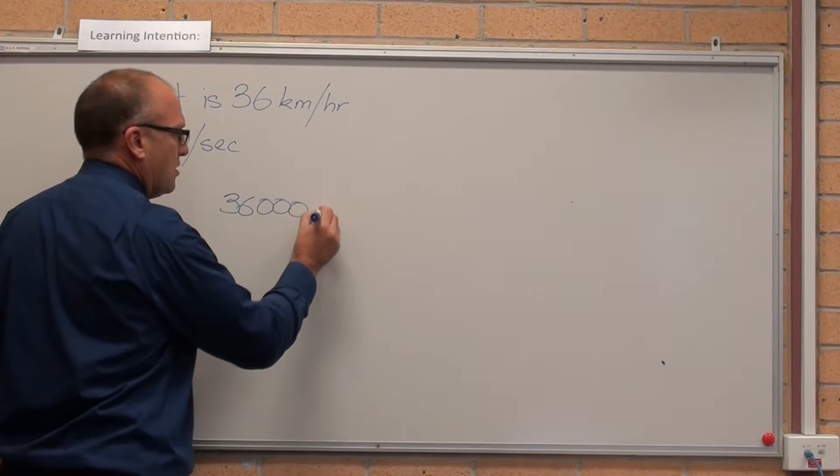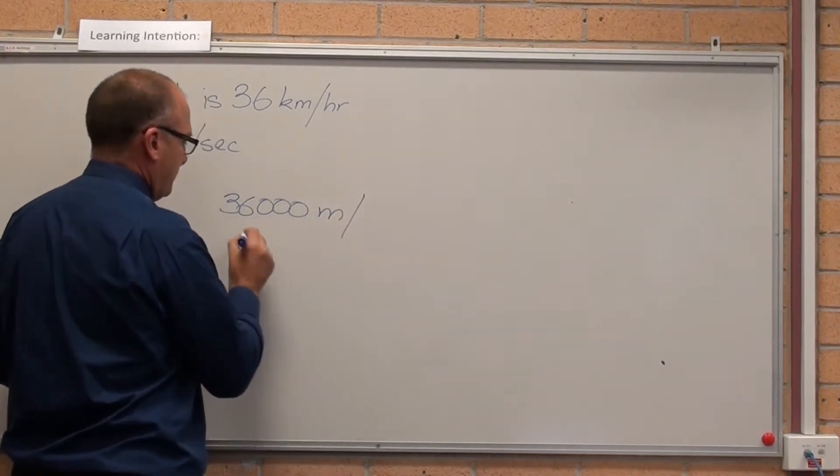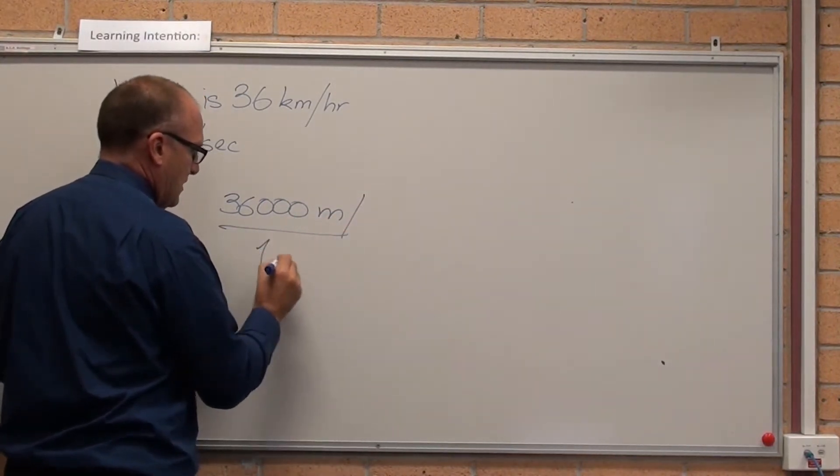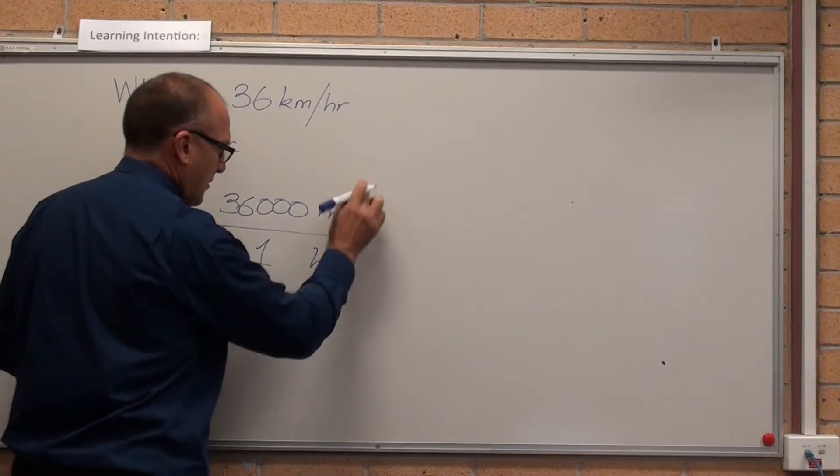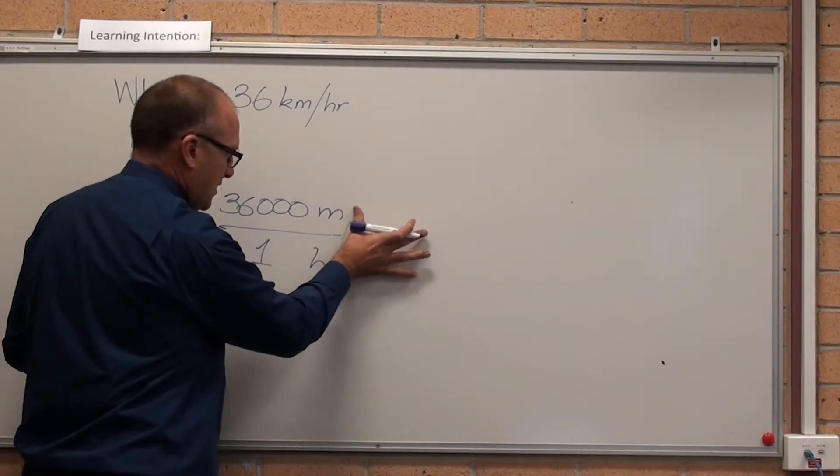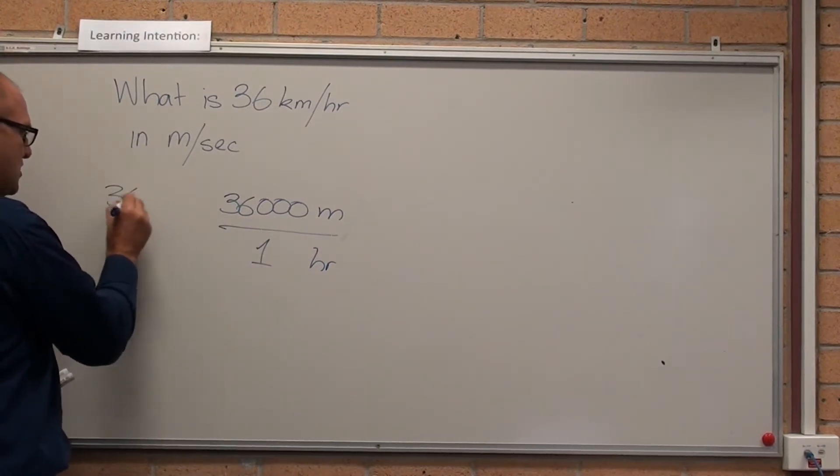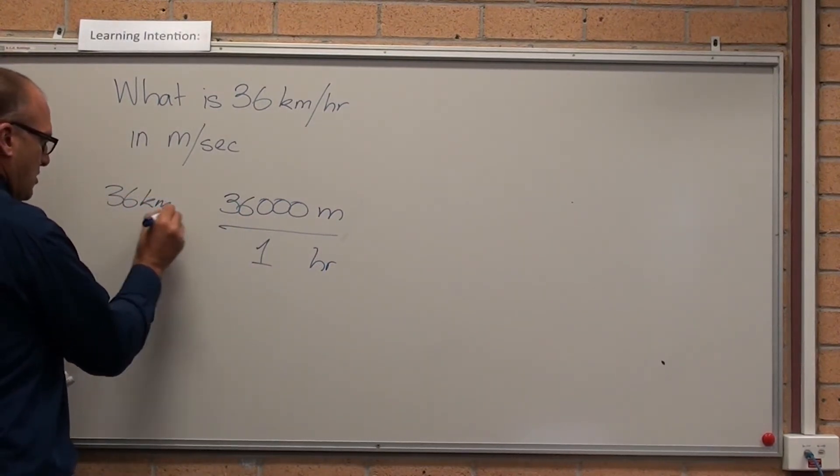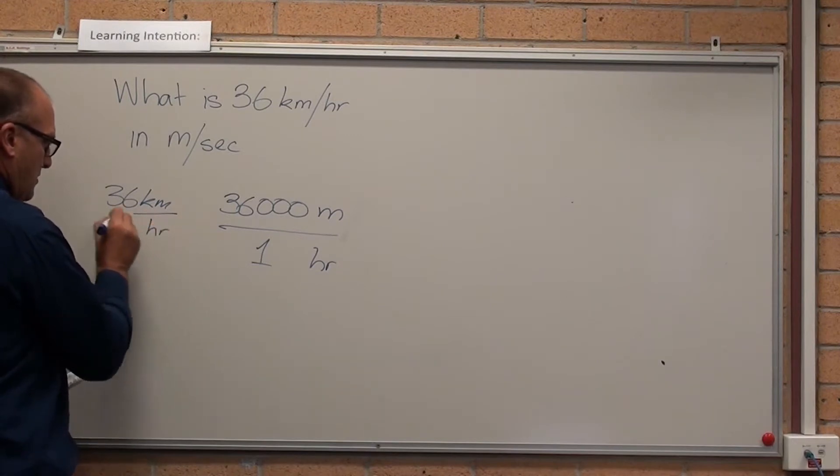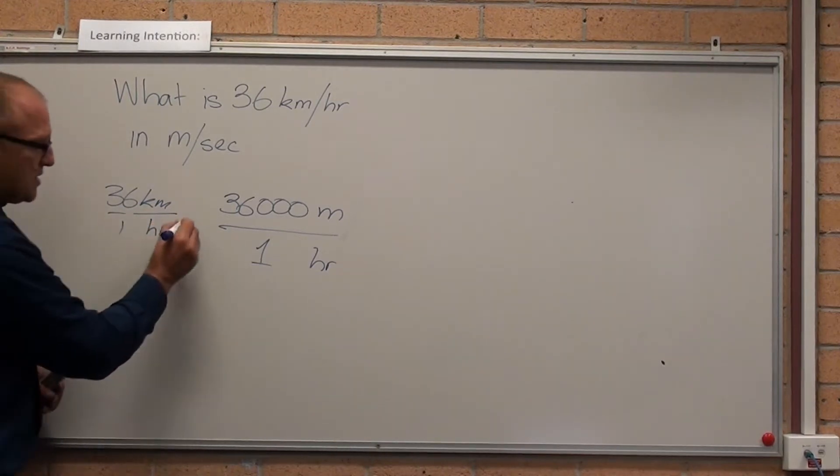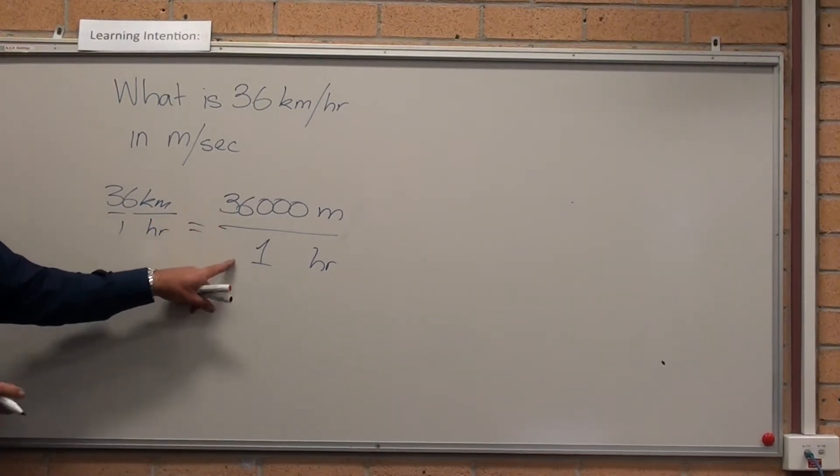36,000 metres per one hour. That is saying we are doing 36,000 metres in one hour. So, that's 36 kilometres per hour is 36,000 metres in one hour.